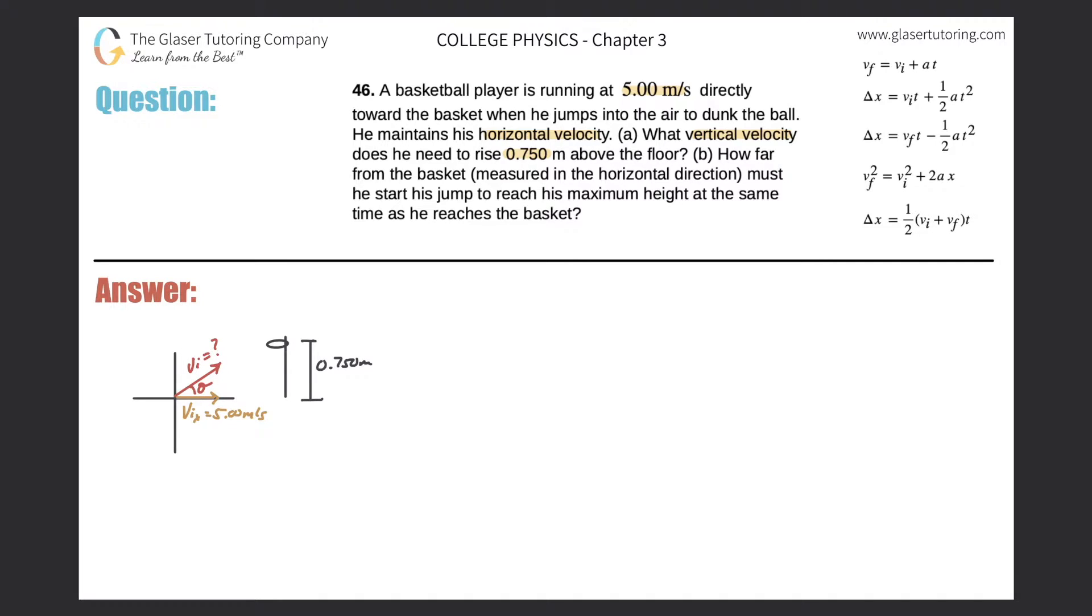We don't know the resultant velocity yet of what he should have jumped off the floor with. What we are trying to find now is, assuming basically that he jumps and he reaches his maximum height right here. What we're trying to find is we're trying to identify what initial velocity in the y direction.